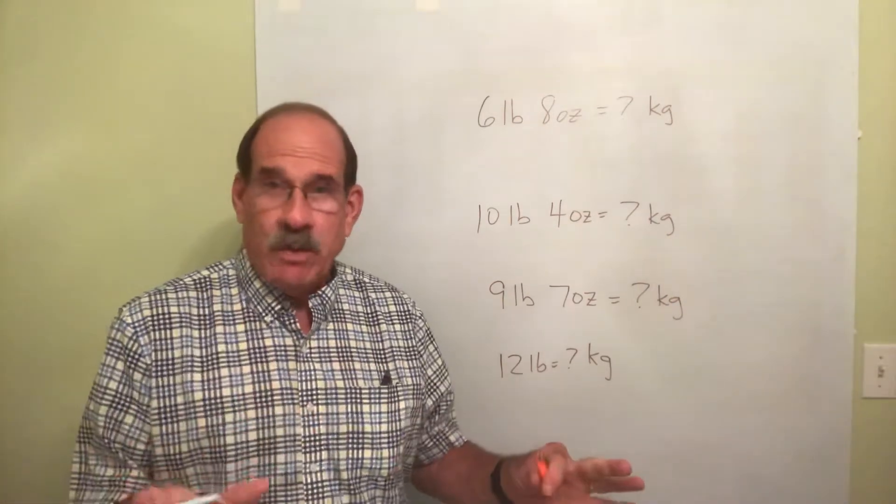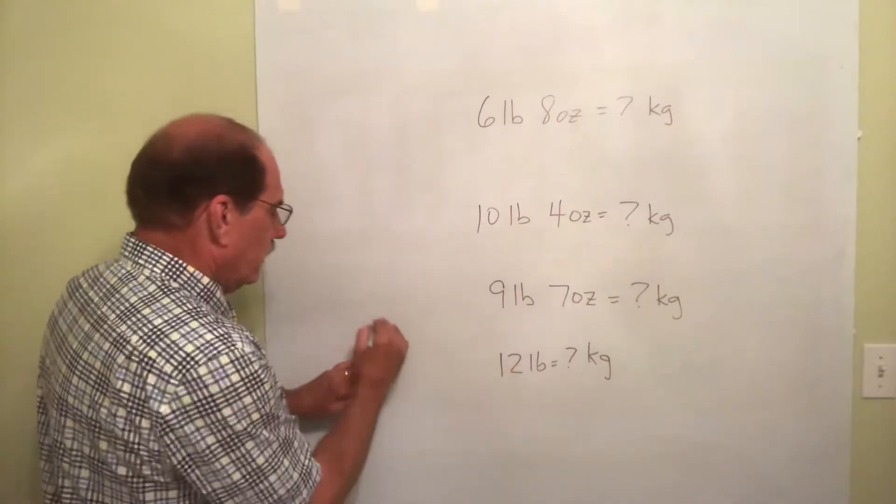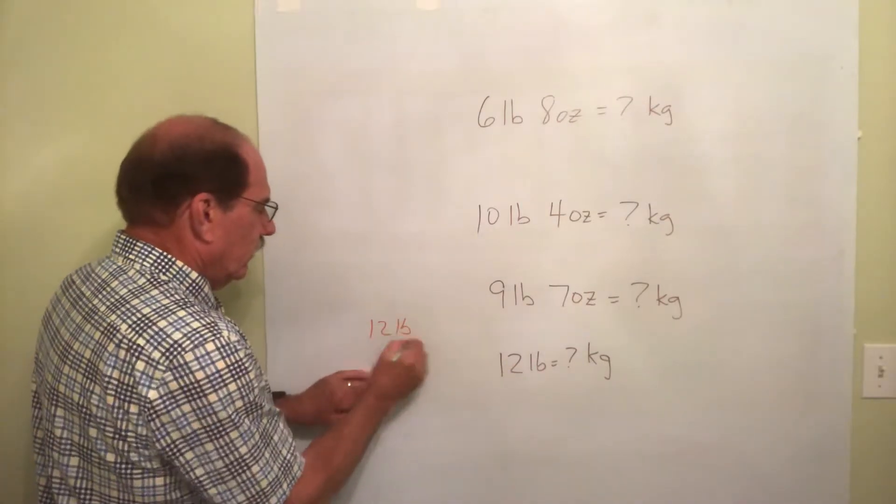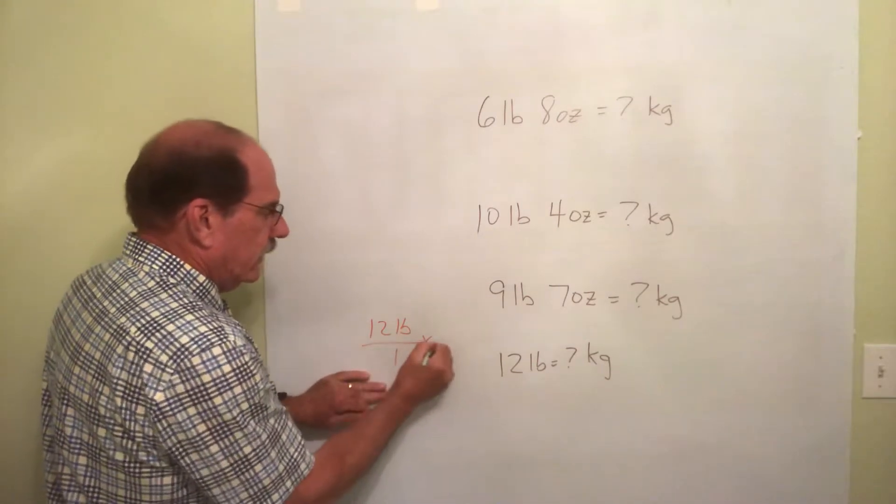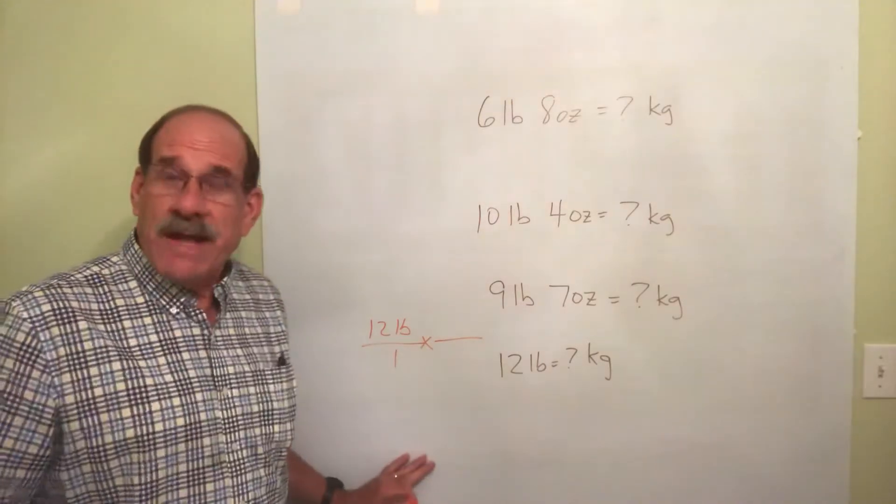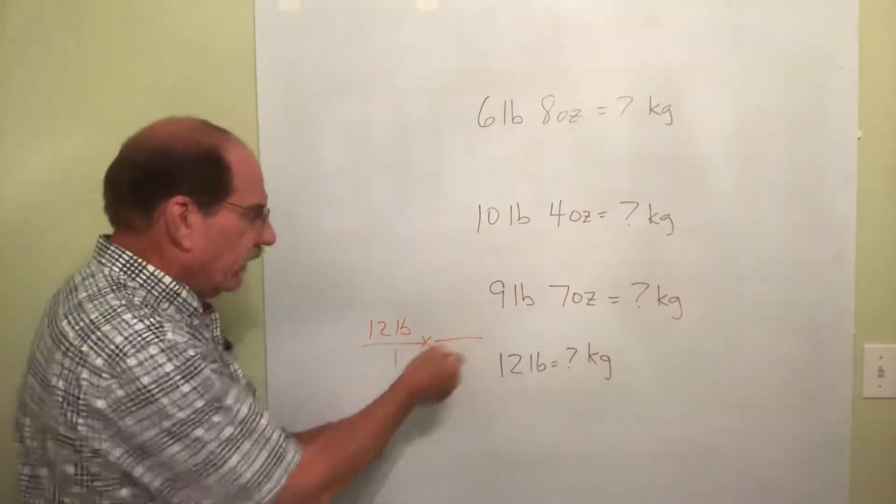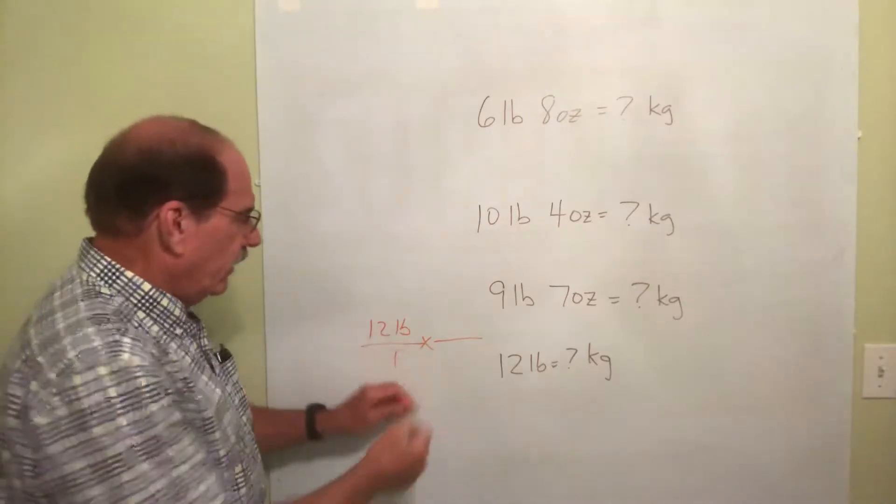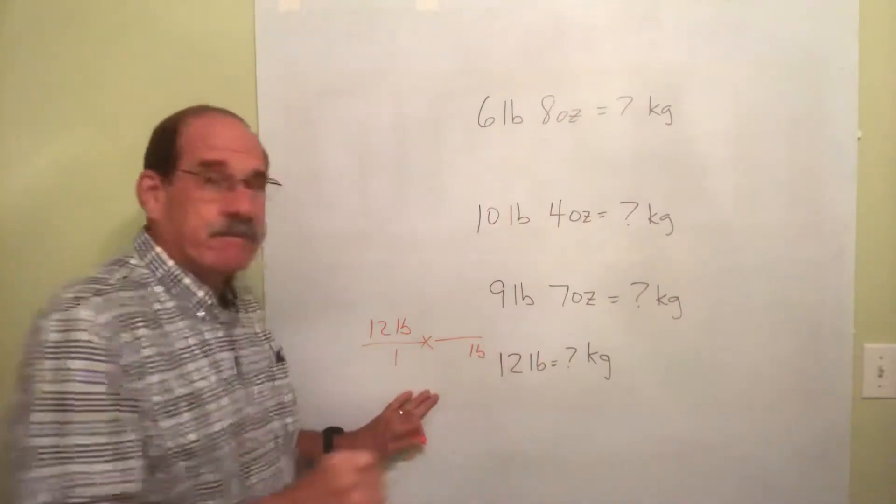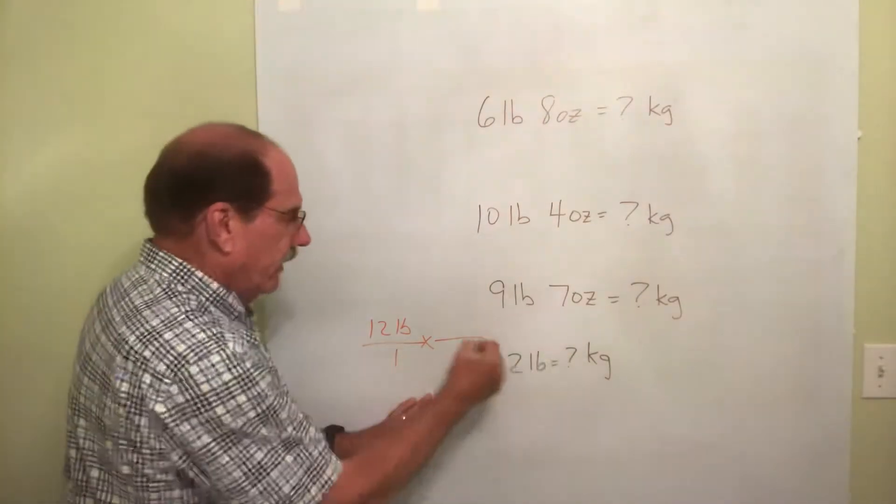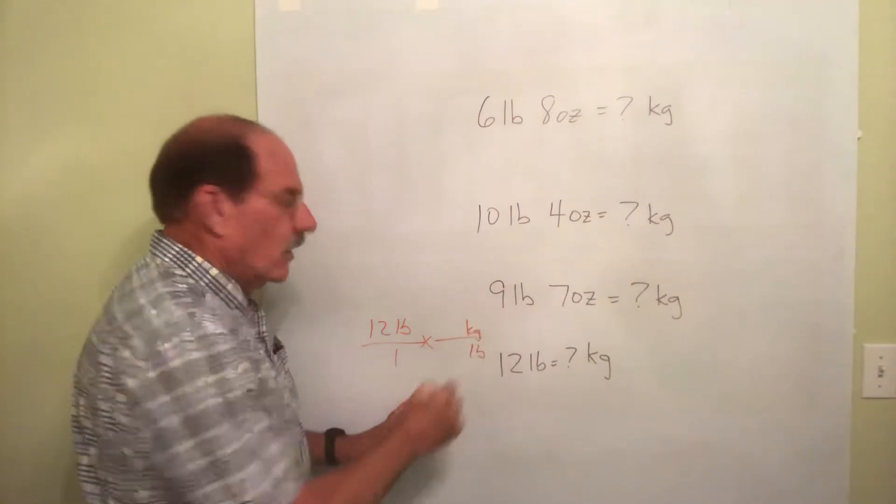Set it up the same way every time. What I know: 12 pounds, put it over one. What do I do next? Now multiply by the second fraction. Where pounds is up here, pounds will go down here. I'm trying to find kilograms so kilograms goes there.